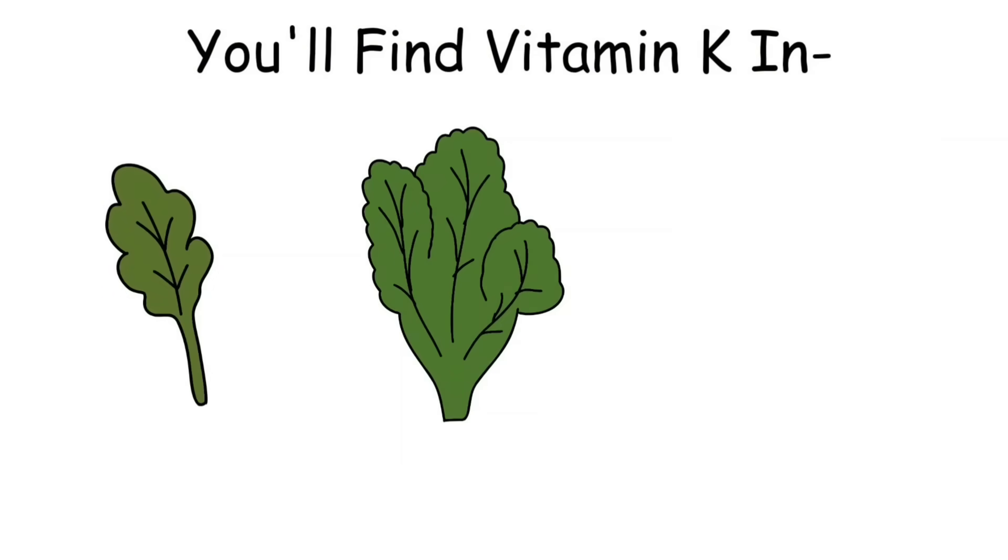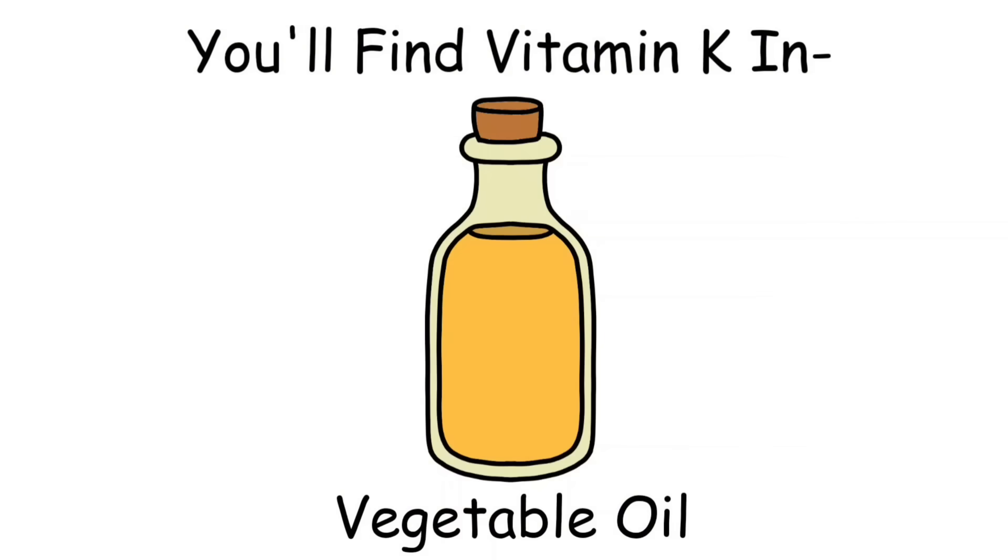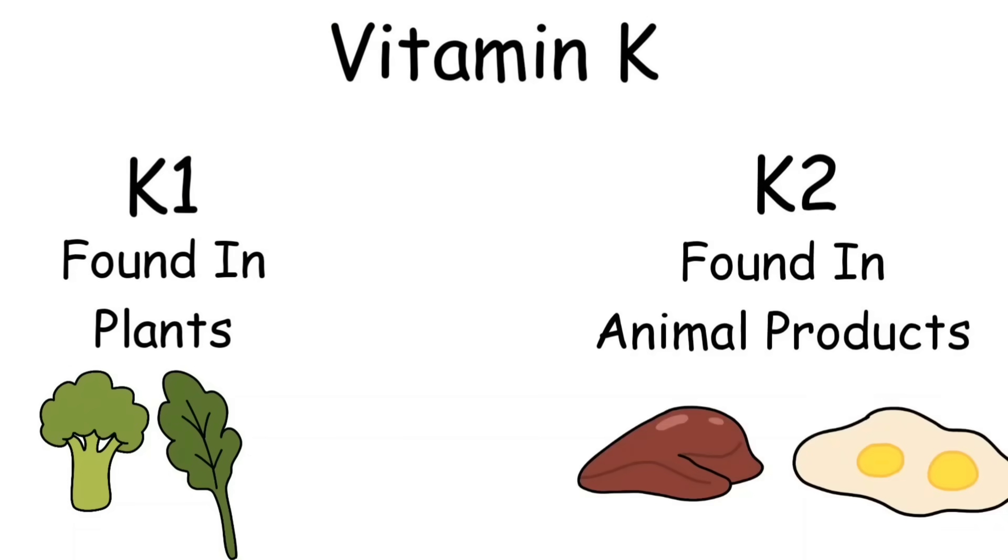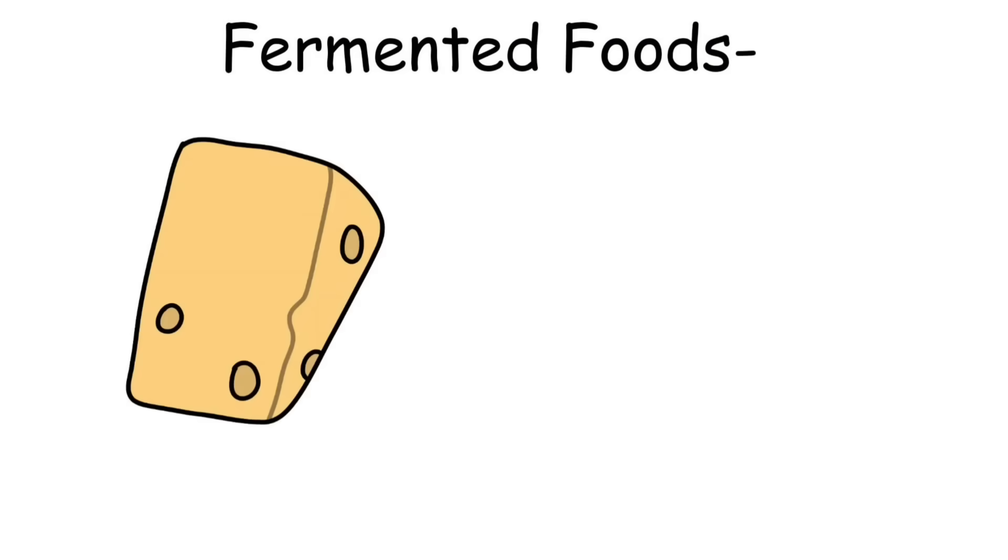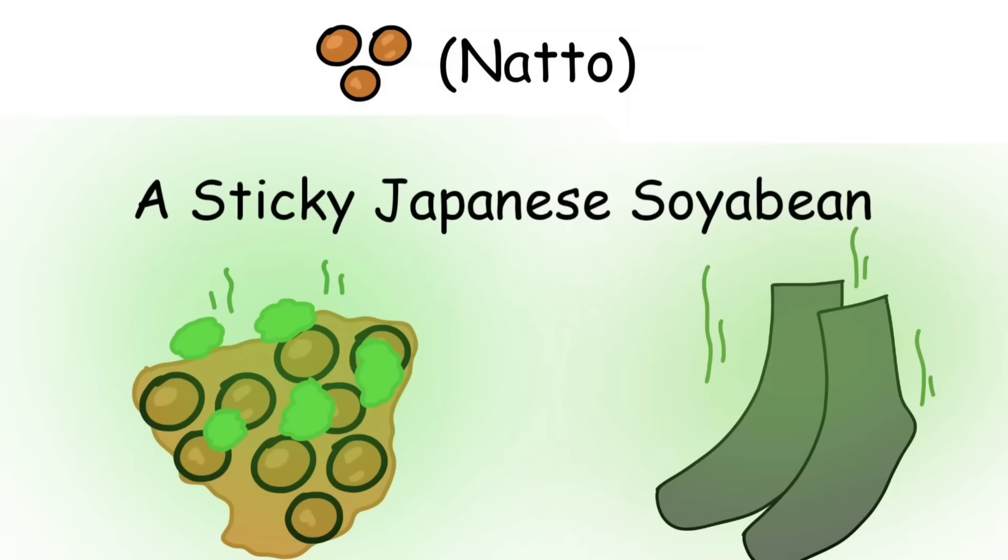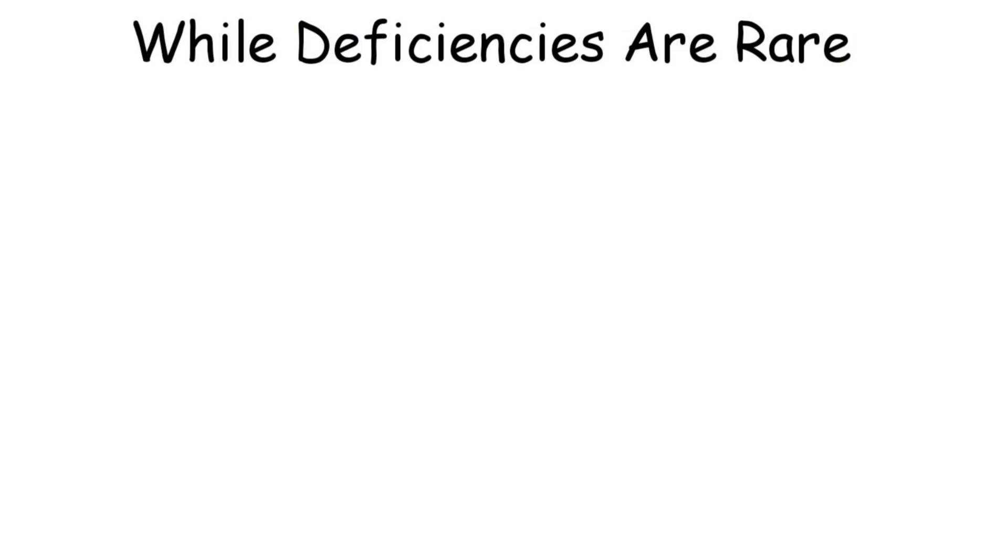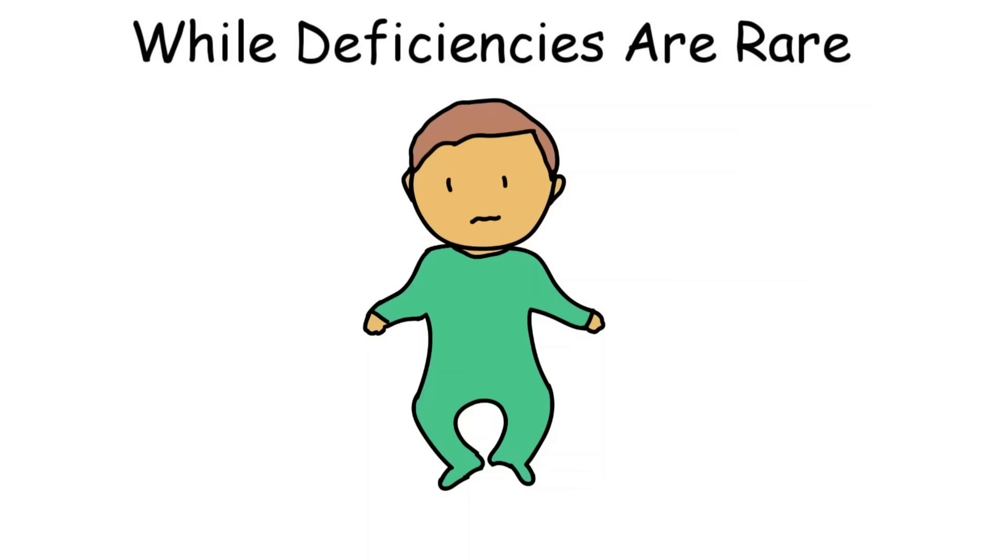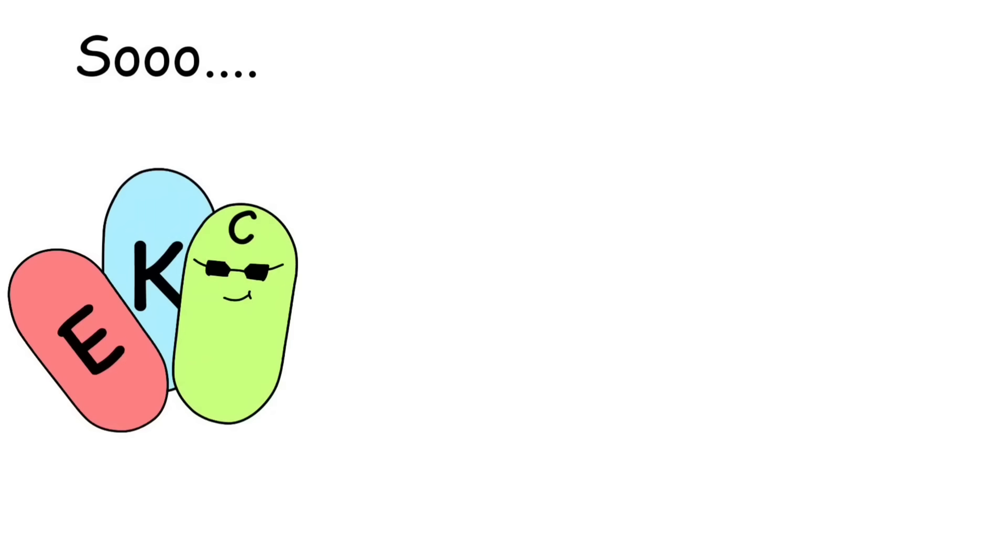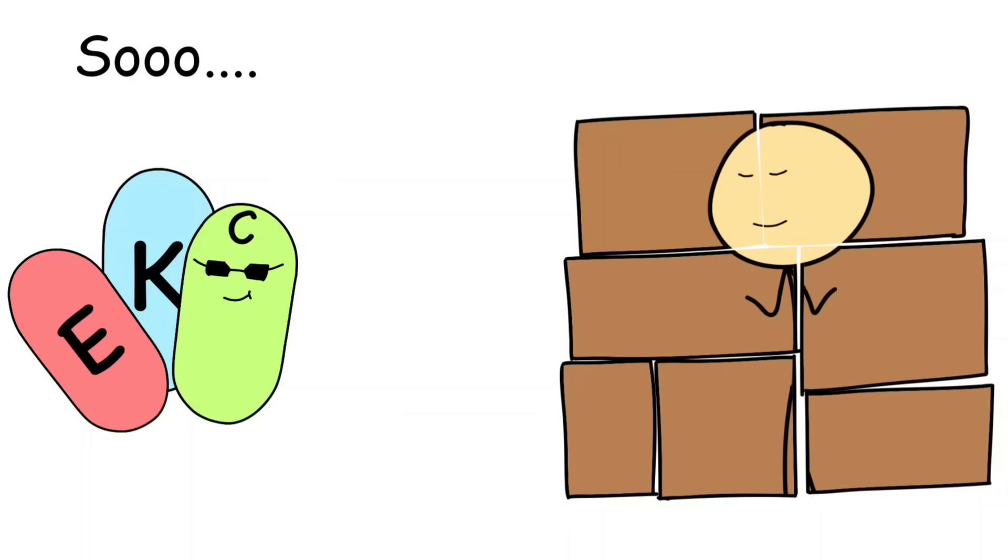You'll find vitamin K in leafy greens like spinach, kale, and broccoli, as well as in vegetable oils. There are actually two main types: K1, found in plants, and K2, found in animal products and fermented foods like cheese and natto - a sticky Japanese soybean dish that smells like old socks, but is packed with nutrients. While deficiencies are rare, newborn babies are especially vulnerable, which is why hospitals give them vitamin K shots right after birth.